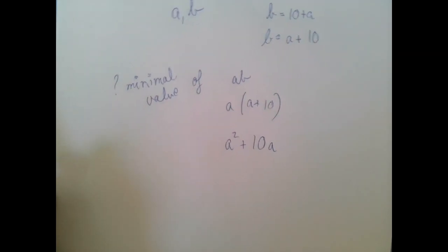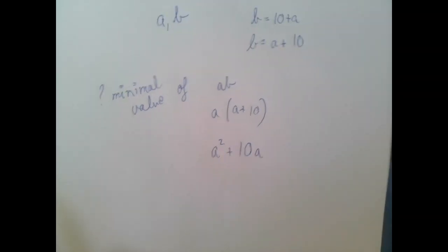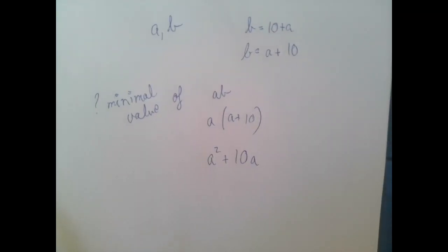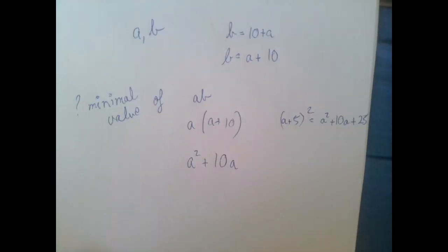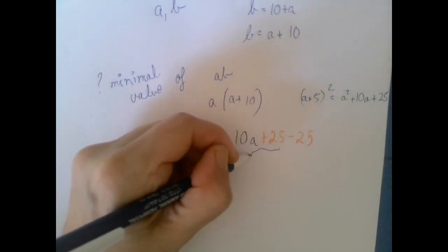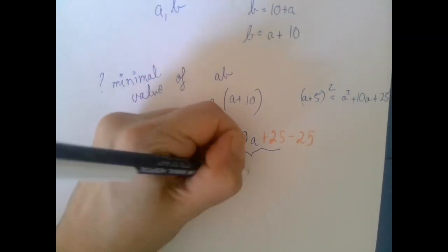We need to complete the square to bring stuff to the standard form. So half of the linear coefficient is 5, which means a plus 5 squared is our complete square, which means we smuggle in 25. The first 3 gets absorbed into the complete square.